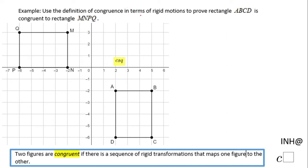Welcome, or welcome back, to C Squared. In this example we need to use the definition of congruence in terms of rigid motion to prove that rectangle ABCD is congruent to rectangle MNPQ. We need to find a sequence of rigid transformations that will map ABCD onto MNPQ.